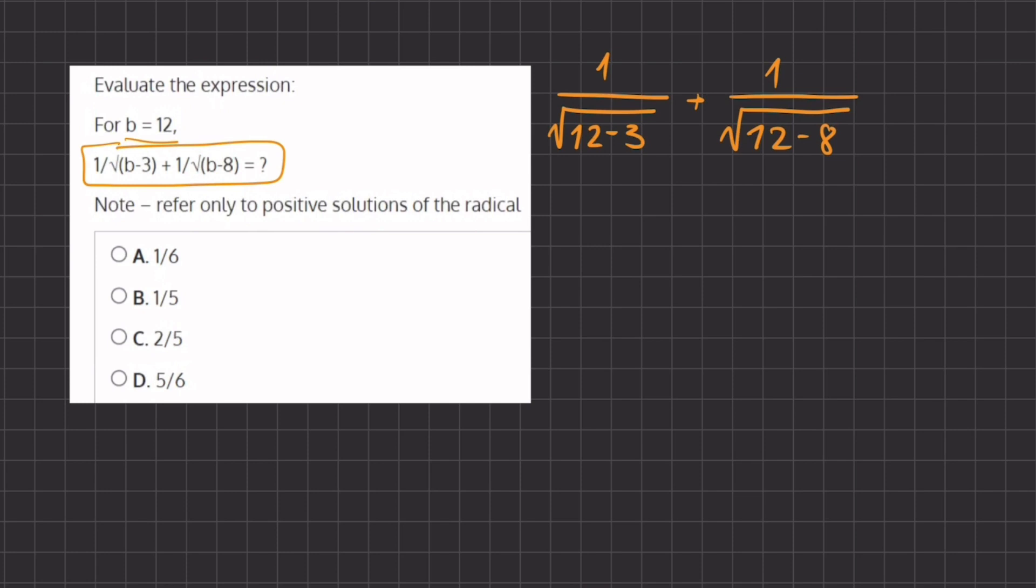Alright, so now let's start simplifying. We have 1 divided by radical, 12 minus 3, which is 9, plus 1 divided by radical, 12 minus 8, which is 4.